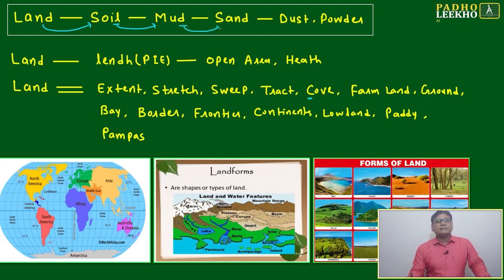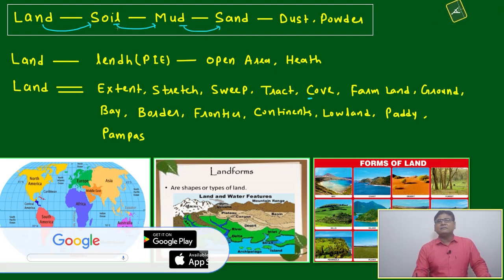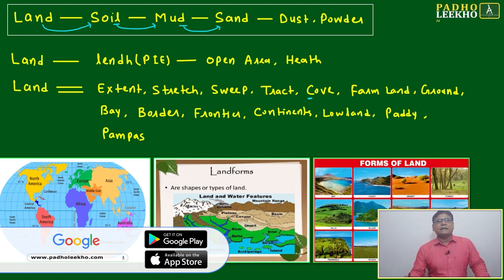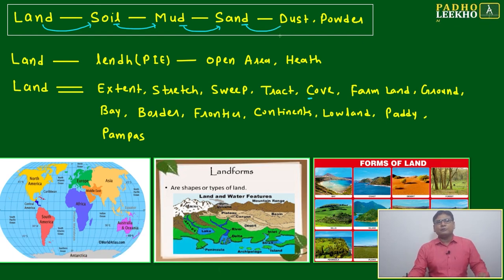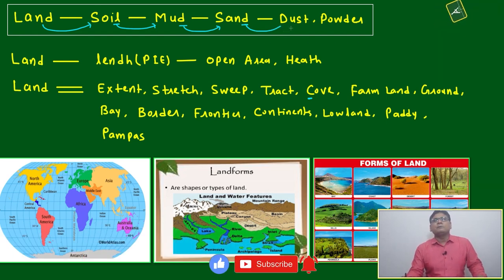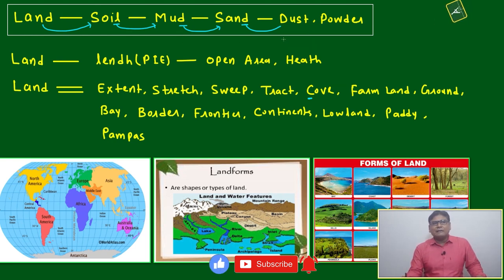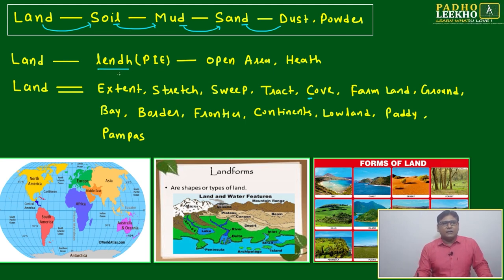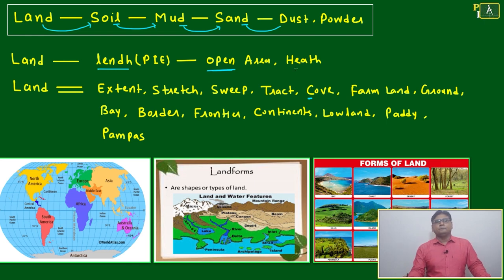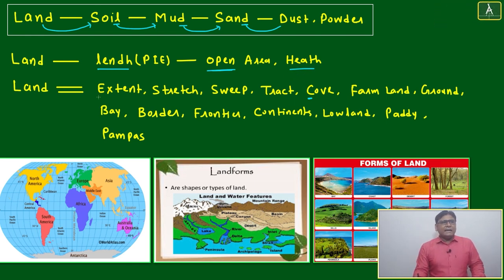Another category of soil is sand. If sand becomes finer granules, it will become dust and powder. This sequence or logical understanding will be enough to understand about land. The Proto-Indo-European root for land was 'length,' meaning open area. From that root, the word 'land' developed.